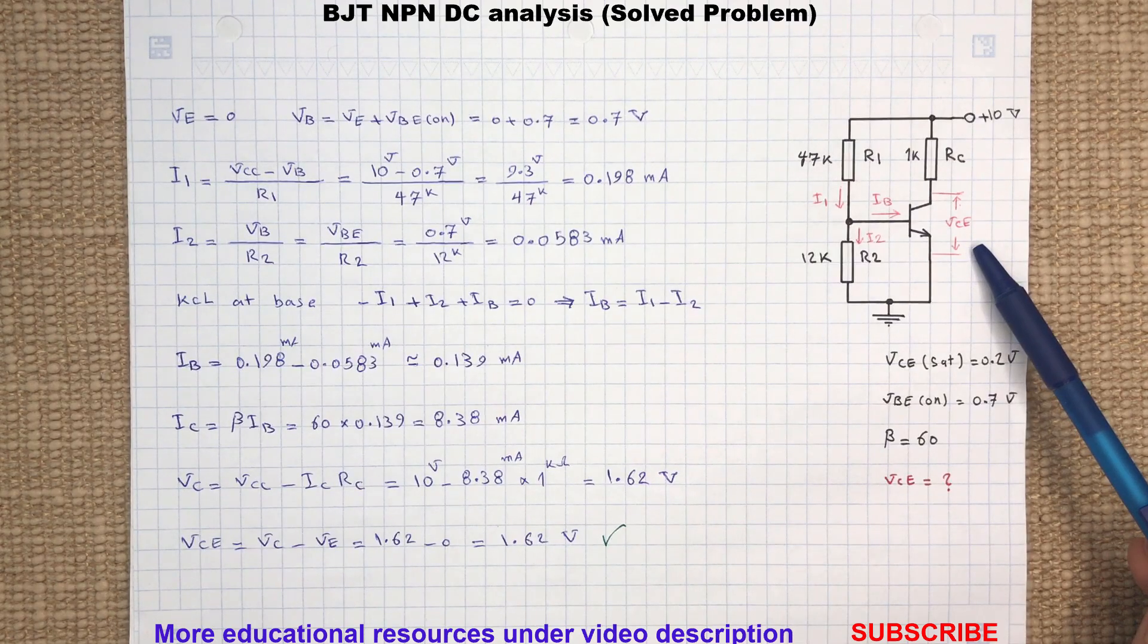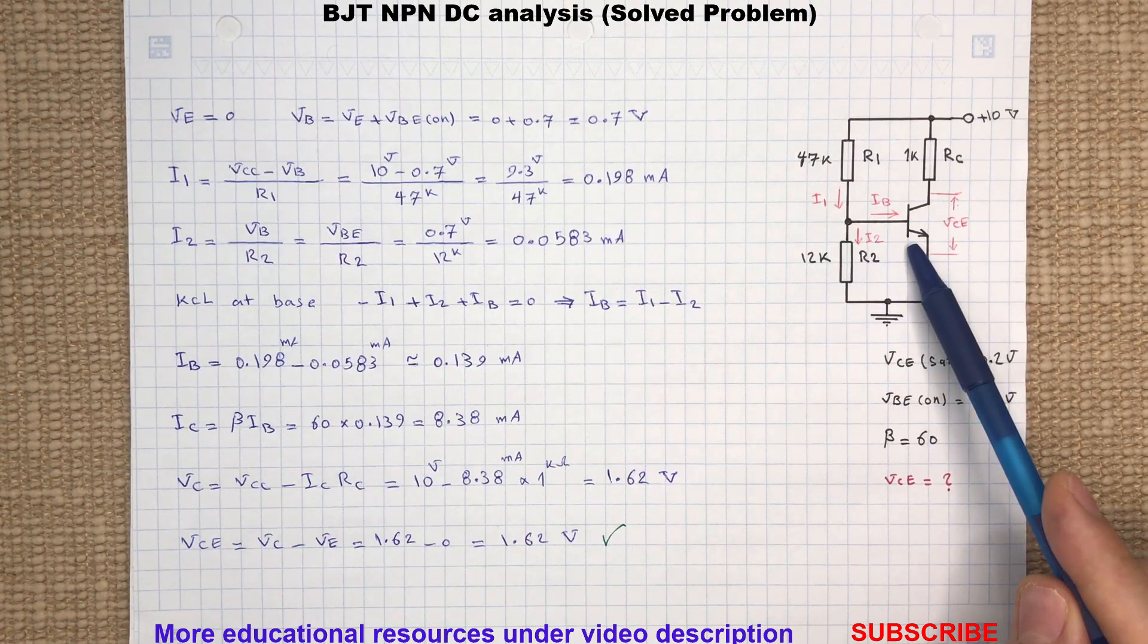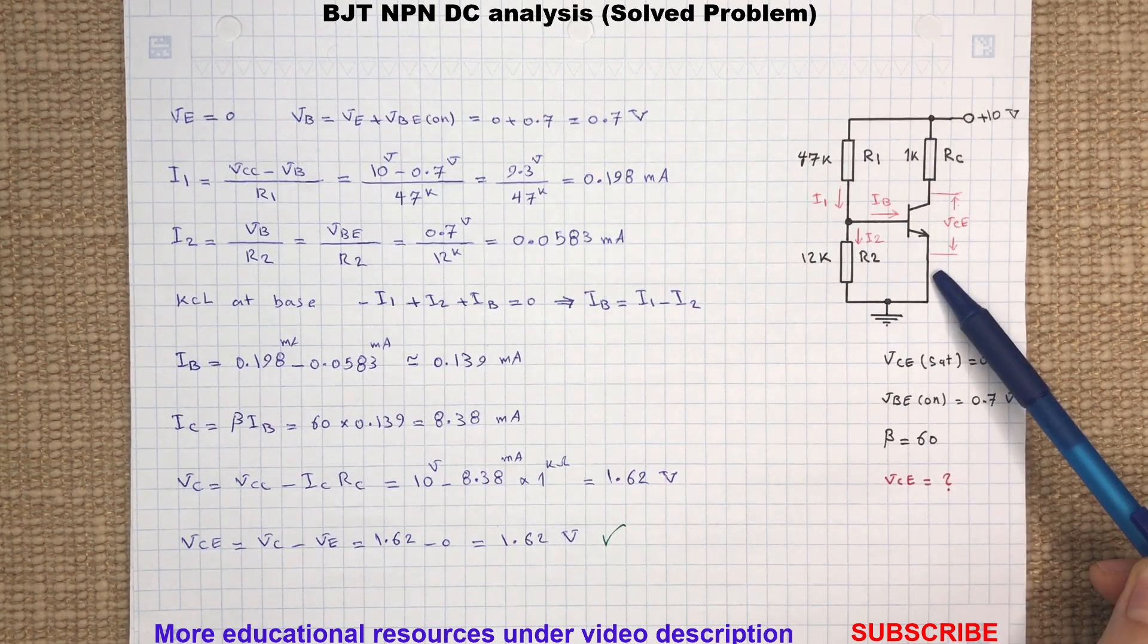To find the collector-emitter voltage, let's assume the transistor is in active region. With that assumption, the base-emitter junction will conduct and we will have a 0.7 volt drop from the base to the emitter.